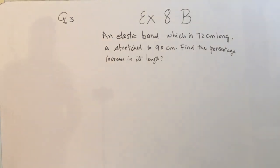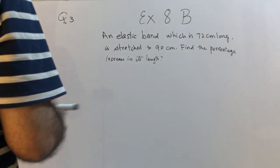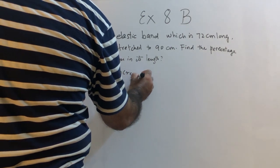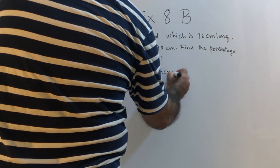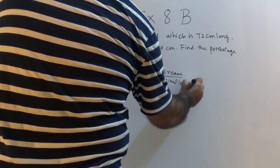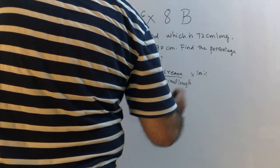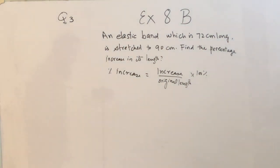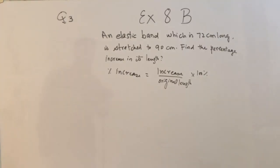Question number three: an elastic band which is 72 centimeters long is stretched to 90 centimeters. Find the percentage increase in its length. The formula for percentage increase is: increase over original length, multiplied by 100 percent.